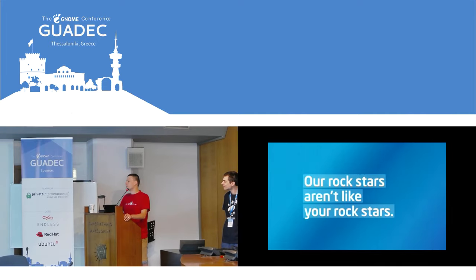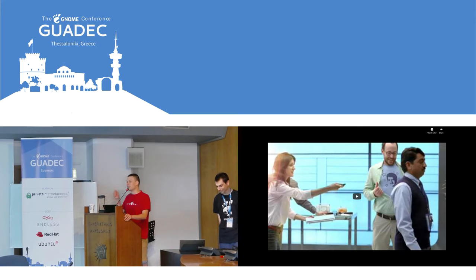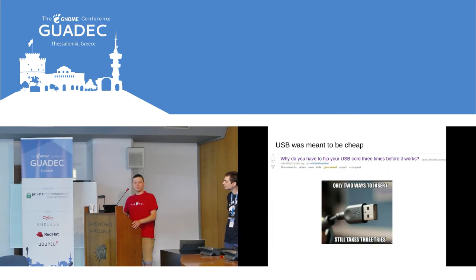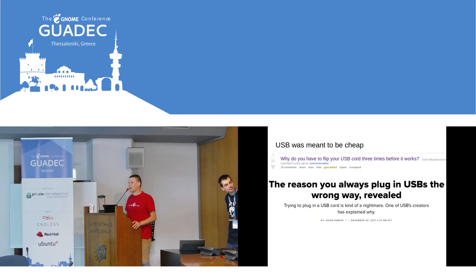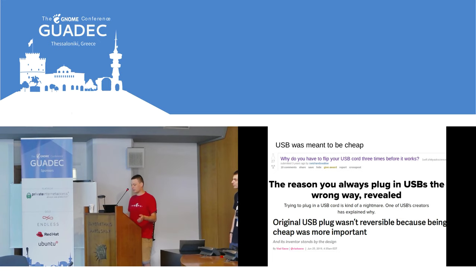Anybody of my age will remember that connecting a joystick to a computer was a massive pain. These days you just need to plug in USB and it just works. USB was meant to be cheap — that's the reason why you need to flip it twice again for it to work. It was by design, because it was cheaper — unidirectional rather than bidirectional — and that arguably led to USB's success.